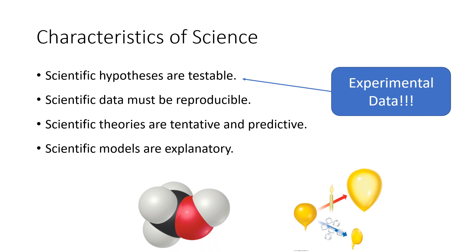A fourth characteristic is that scientific models are explanatory — we use models to explain things. For instance, we can use the atomic model, illustrated in the bottom left, which I believe is a model of a molecule known as methanol. We can use the atomic model to explain things like why a balloon expands in volume when heated and contracts in volume when it gets cold.